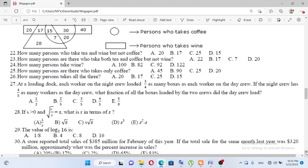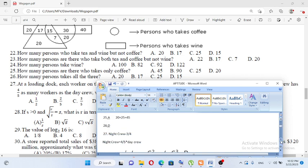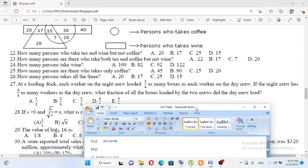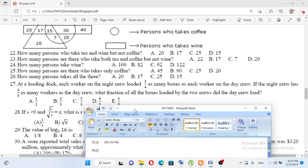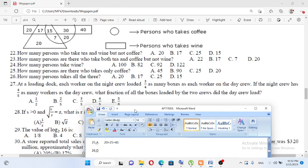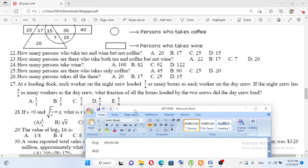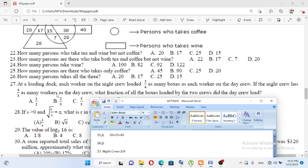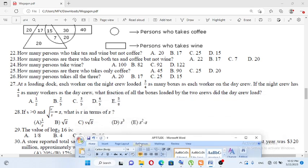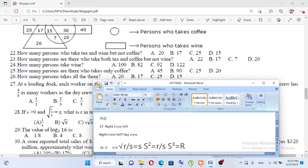If the night crew has four-fifths as many workers as the day crew, what fraction of all boxes loaded by the two crews did the day crew load? Three-fourths times four-fifths equals three-fifths.